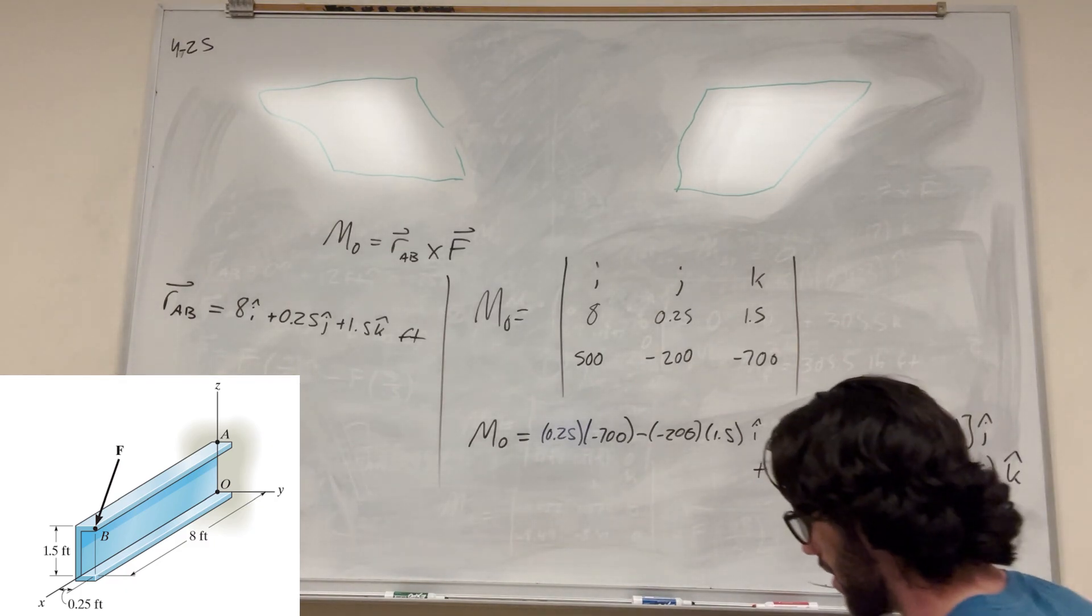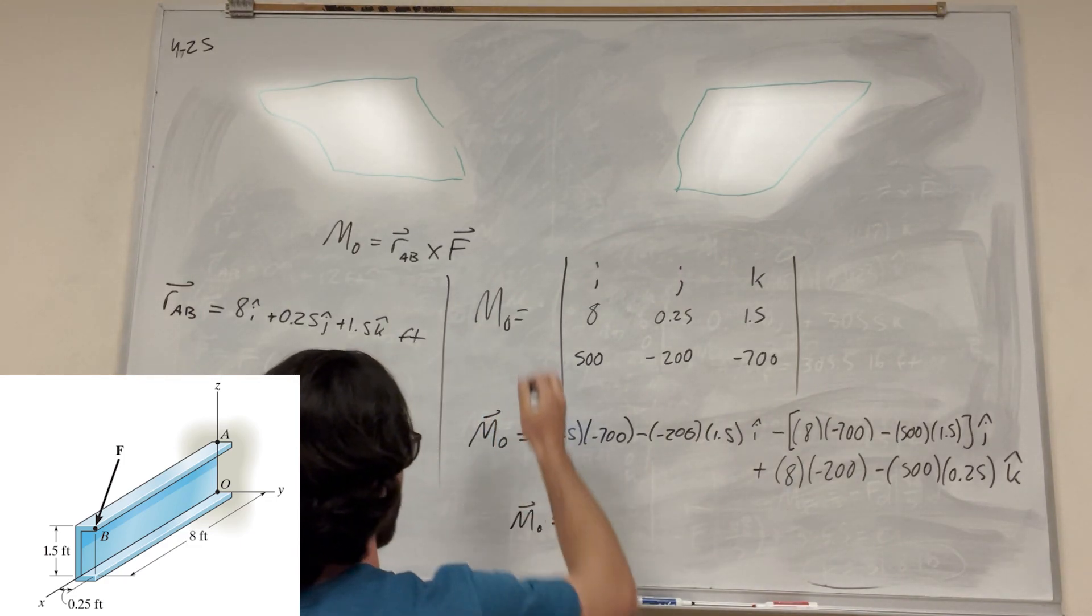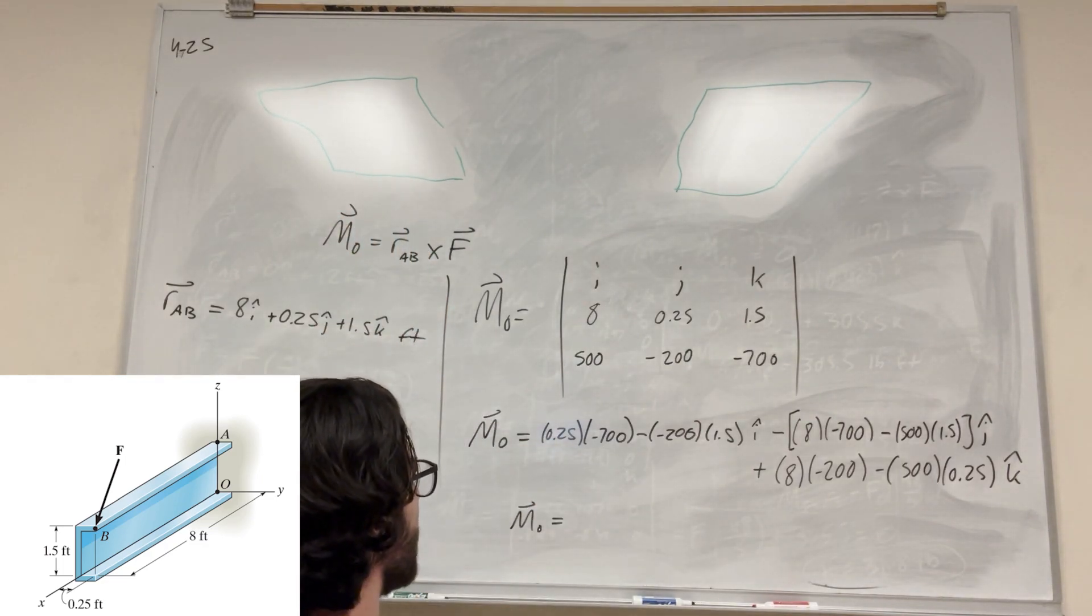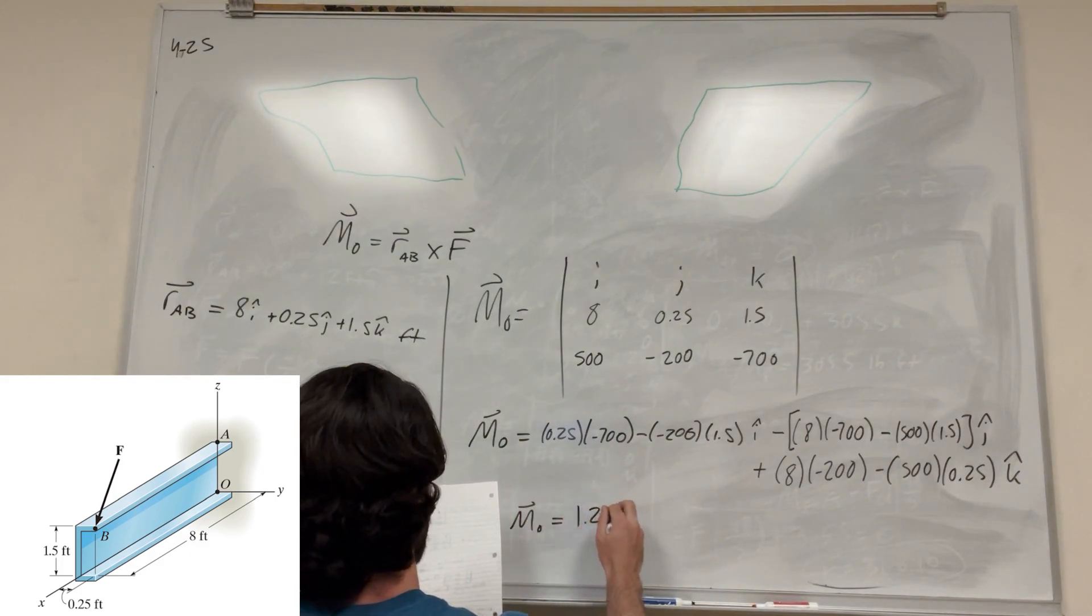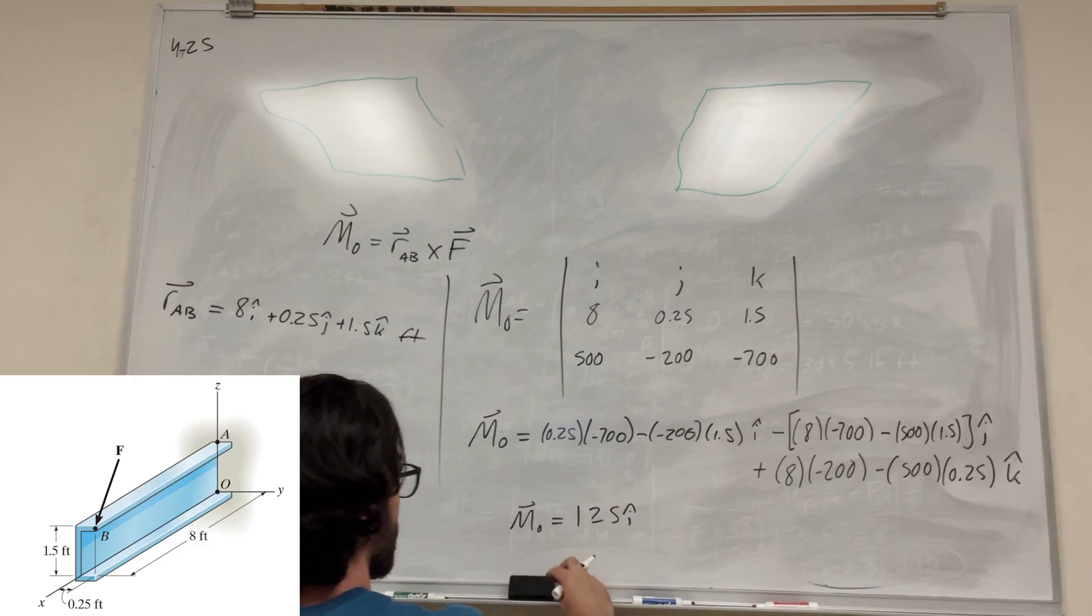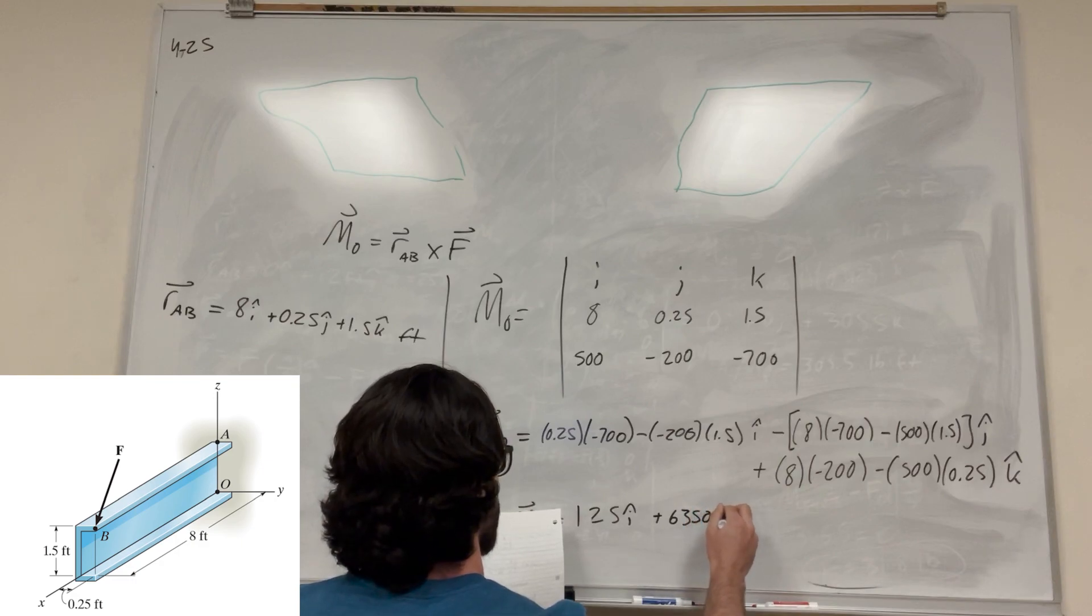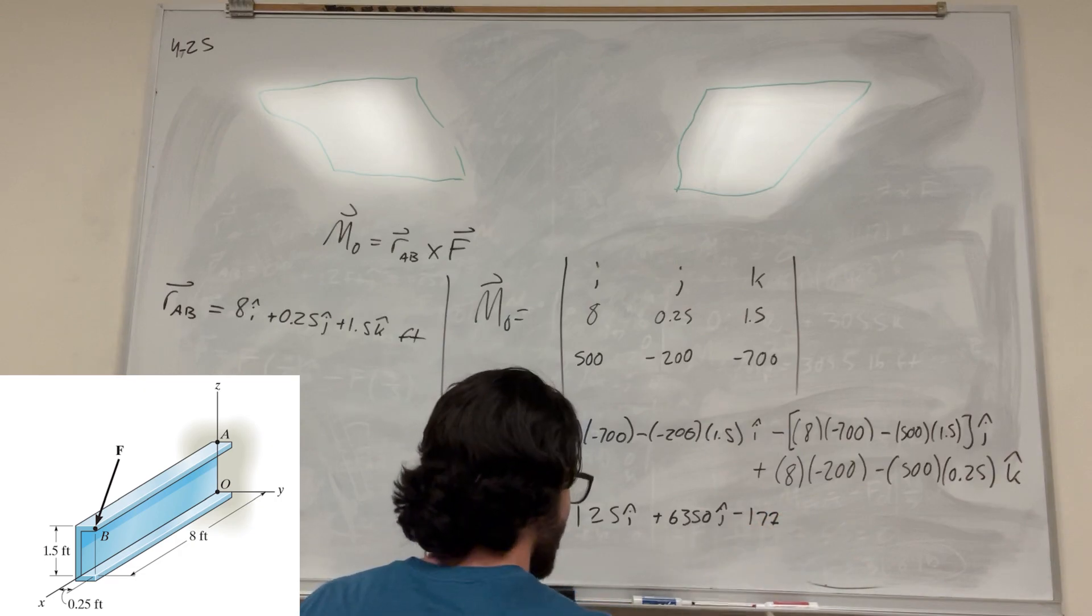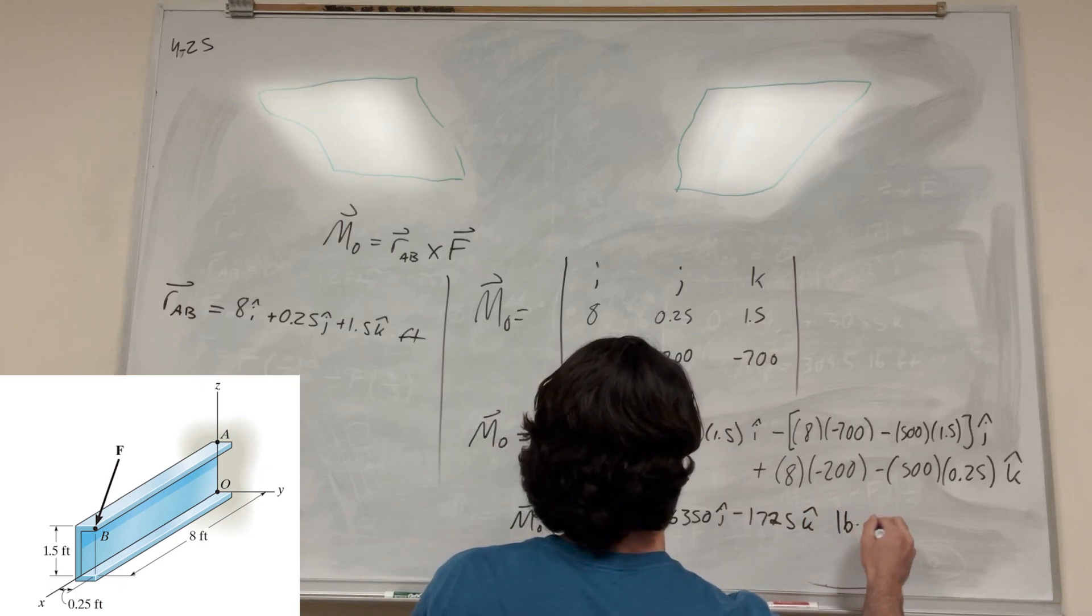So now what we're going to do is simplify this down, and we're going to get the moment. This is actually a vector, so we have to not forget that. Don't forget your arrows, guys, it's important. Okay, so if you do the math on this, you're going to get 125i plus 6,350j minus 1,725k, and this is in pound feet.